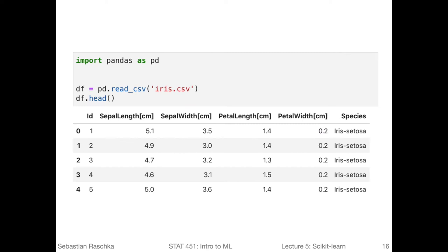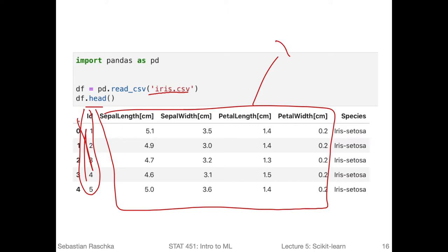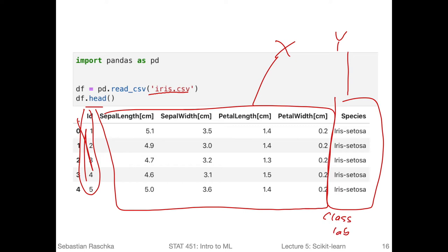I'm showing you this because lambda is very commonly used in the context of certain pandas data transformations on columns. Recall in the previous lecture, we read in the iris data into a pandas DataFrame. The iris dataset had 150 rows, an ID column which is not important, some feature columns — we usually use a design matrix X for the features — and then our class labels, which we usually call y.